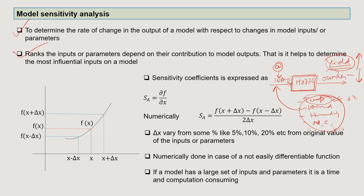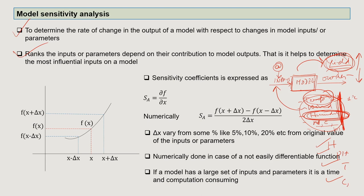Sensitivity analysis also ranks the inputs or parameters based on their contribution to the model output. For the crop model where the output is yield, sensitivity analysis allows us to rank input parameters — temperature, wind, humidity, nitrogen, carbon, etc. — depending on their role in controlling or regulating yield. You might find that humidity significantly affects yield, followed by pH, then temperature, then carbon and nitrogen. This helps determine the most influential inputs on a model.